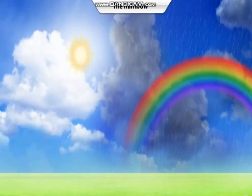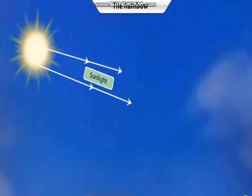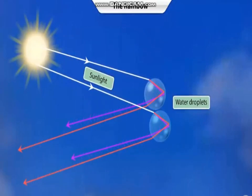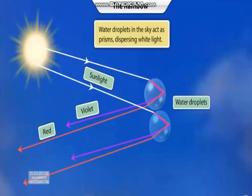Sunlight bends as it enters the droplets in the air. The droplets reflect off the sunlight internally and refract the light again as it moves out into the air. In this way, each water droplet acts as a prism and disperses sunlight. Together, millions of such tiny droplets form the bow-shaped spectrum in the sky.